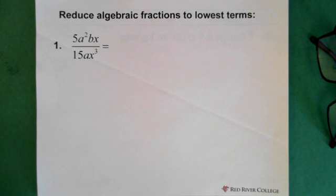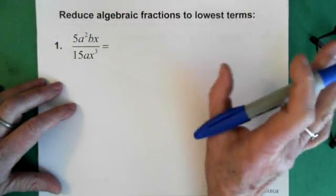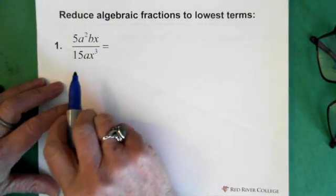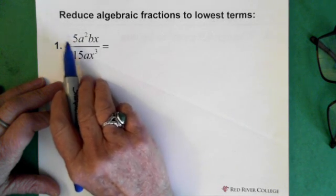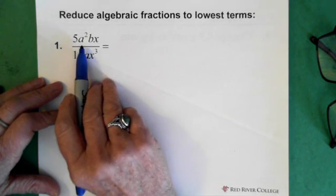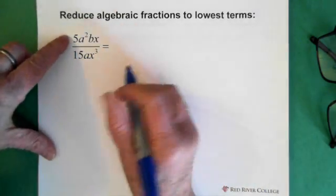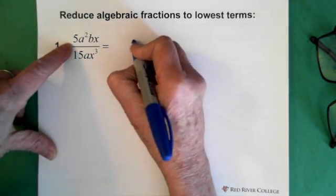Alright. So here's our first fraction that we're going to reduce. And at this point, we're focusing on the factoring. What we want to do is figure out what's common to the top and bottom here. We can see that in the numerator and the denominator, we have a 5.